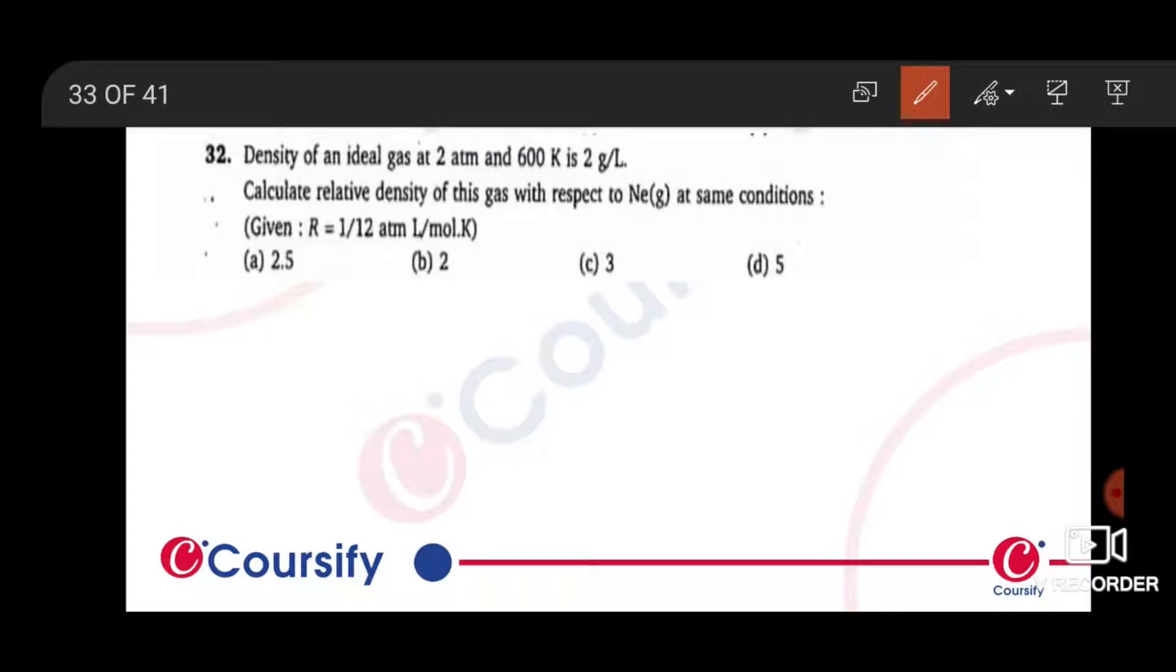Density of an ideal gas at 2 atm and 300 Kelvin is 2 gram per liter. Calculate the relative density of this gas with respect to neon gas at the same condition.